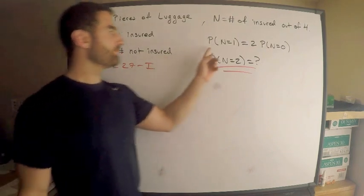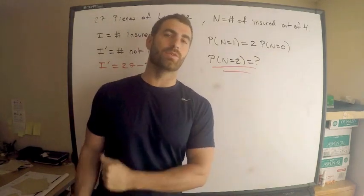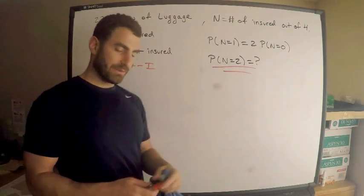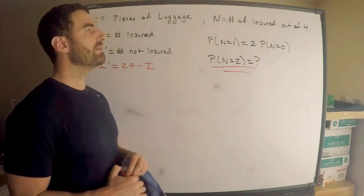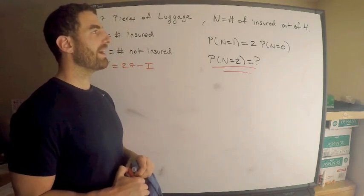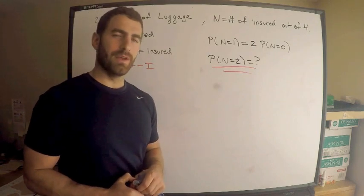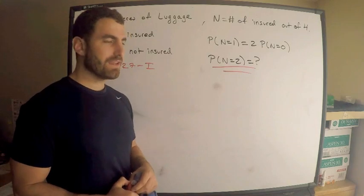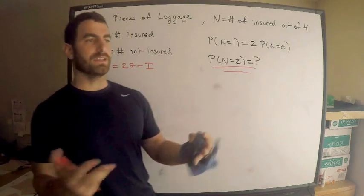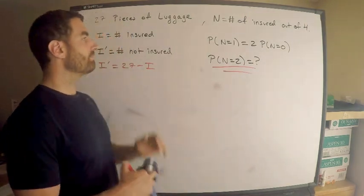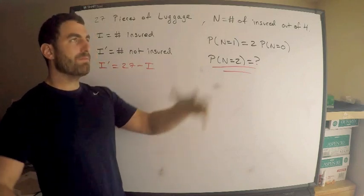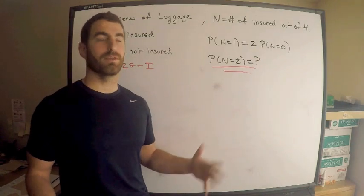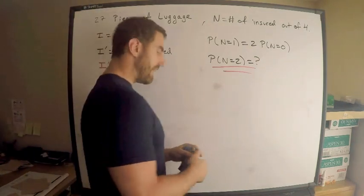We're also given this. Probability n is 1 equals 2 times probability n is 0. Now, as I mentioned, I'm going to use the hypergeometric random variable to describe n. It's kind of like binomial. Why can I not use binomial? Because these are not independent. These pieces of luggage, them being the number that are going to be insured, you're not replacing. There's no replacement here. Not independent. So, I'm going to use hypergeometric.